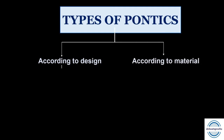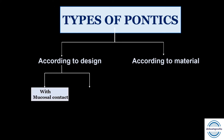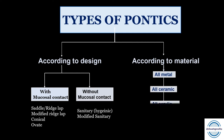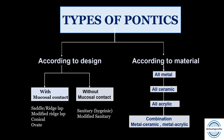According to design, pontics can be with mucosal contact or without mucosal contact — that is, whether they contact the underlying mucosa or not. With mucosal contact we have the saddle or ridge lap pontic, the modified ridge lap pontic, the conical pontic, and the ovate pontic. Without mucosal contact we have the sanitary (also called hygienic) pontic and the modified sanitary pontic. By material, pontics can be all metal, all ceramic, all acrylic, or a combination of metal-ceramic or metal-acrylic.